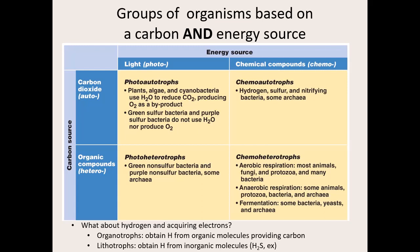A photo-heterotroph gets energy from light but must ingest all carbon molecules. A photo-autotroph gets energy from light and can make all its own carbon — a lot of those are plants. The ones we care most about because they affect us are chemo-heterotrophs. Generally all bacteria that affect humans are chemo-heterotrophs: they get energy from chemical breakdown and ingest all their carbon molecules. These are the ones that cause us the most issues.